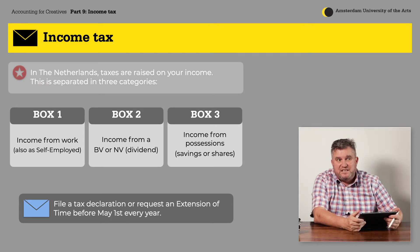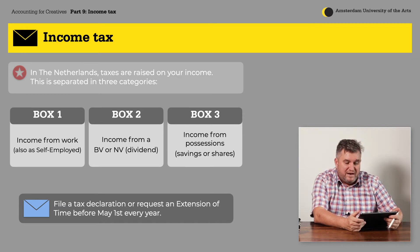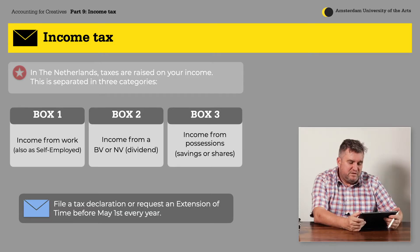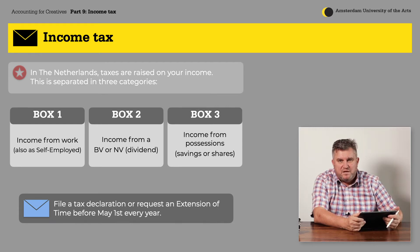Finally, if you have a lot of possessions like savings in the bank, shares, property that you can rent out, or land, then you pay tax over the income you receive from this property in box number three. But as said, we will mainly focus on the income tax you have to pay in box one from your work and your freelance business.